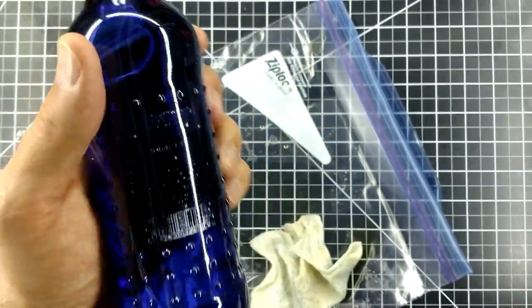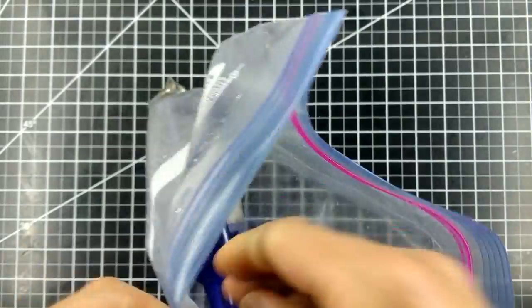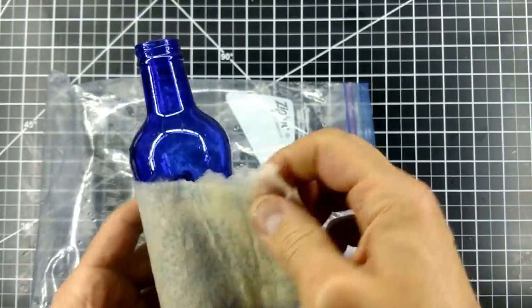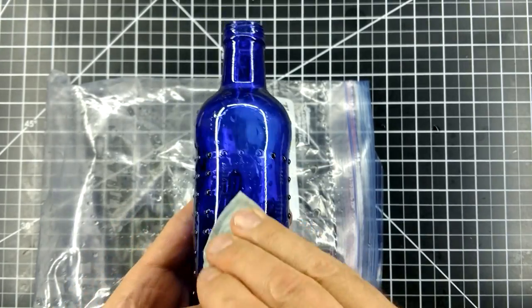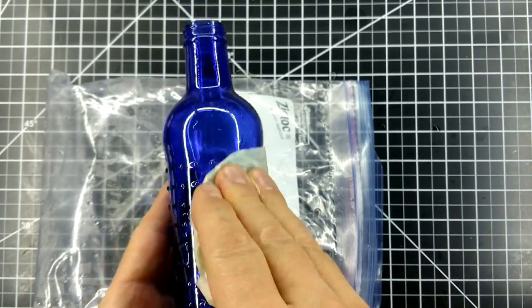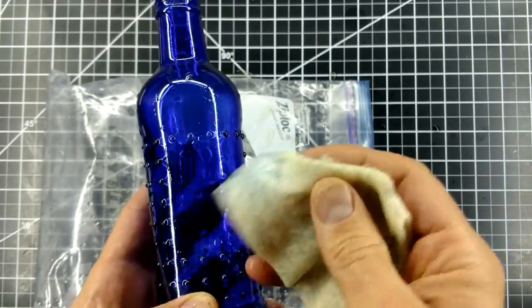I decided to do one final test. This time with apple cider vinegar, I let it soak overnight. With a little bit of rubbing, the paint starts to come off. Without much effort, most of the paint came off and with some harder scrubbing, I was able to get the rest of the paint off.